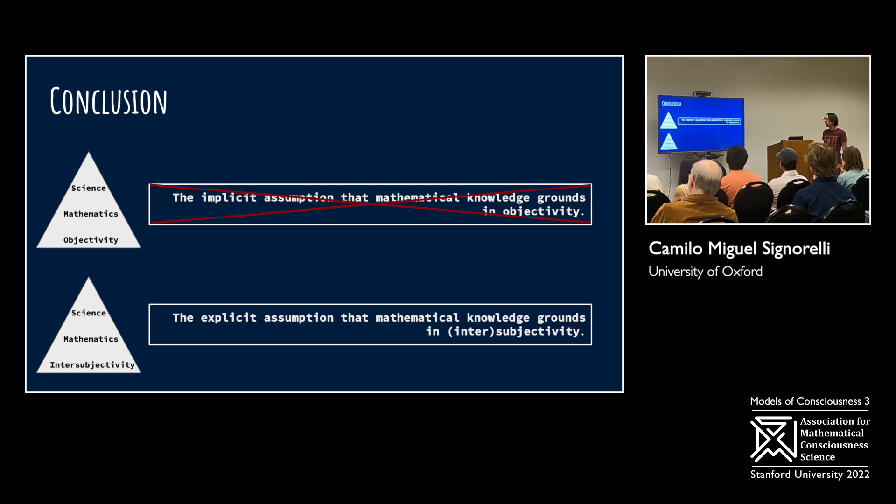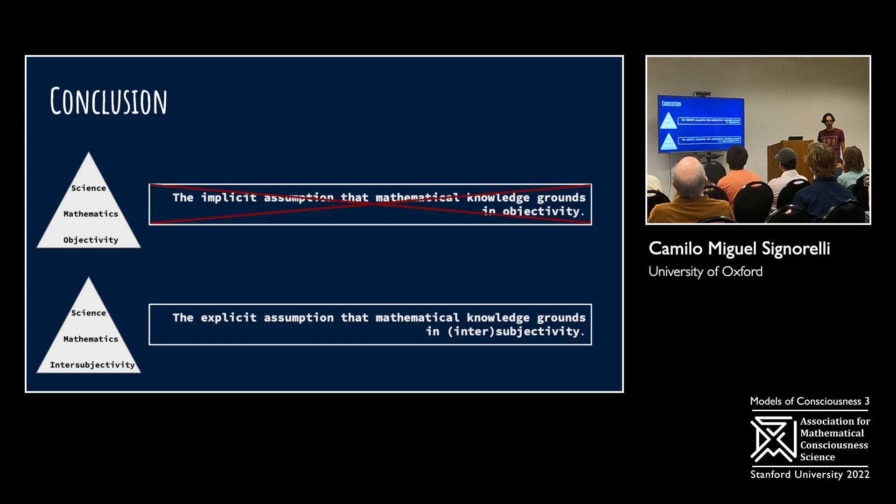So the conclusion: I would like to replace the implicit assumption that mathematical knowledge grows on objectivity with a more explicit assumption that mathematical knowledge grows on intersubjectivity. Thank you very much.